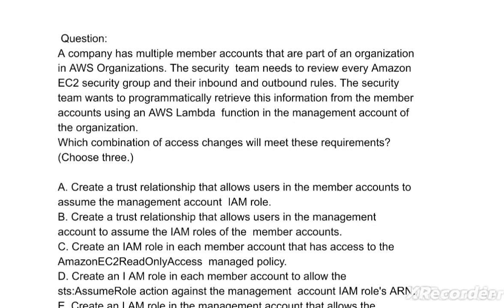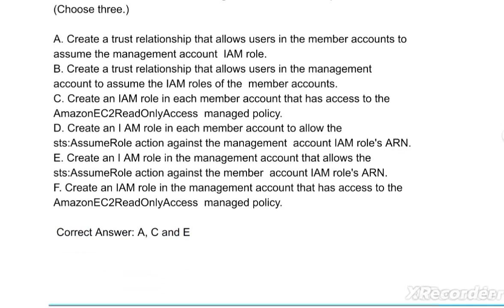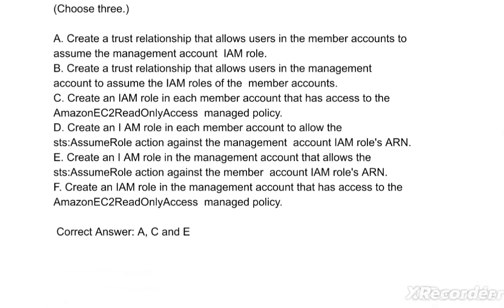The question is: a company has multiple member accounts that are part of an organization in AWS Organizations. The security team needs to review every Amazon EC2 security group and their inbound and outbound rules. The security team wants to programmatically retrieve this information from the member accounts using an AWS Lambda function in the management account. Which combination of access changes will meet these requirements?